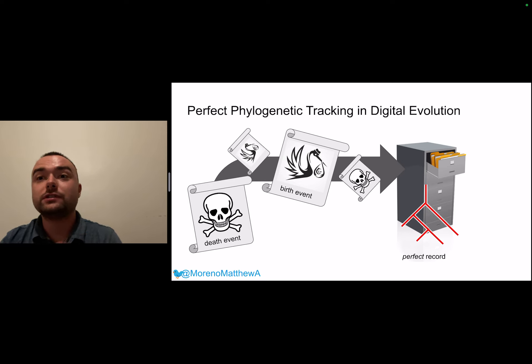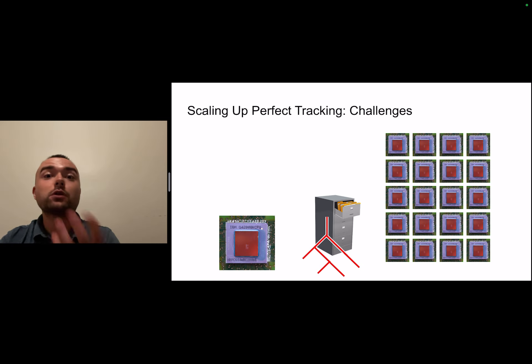Digital evolution systems traditionally use a perfect phylogenetic tracking approach to actually record phylogenetic events as they occur in order to have a perfect record of the actual underlying phylogenetic relationships between individuals within the simulation. You can imagine this kind of like one centralized filing cabinet where all of the events in the simulation are routed there and then assembled to actually construct the phylogenetic tree as it occurs. This works great for traditional single-threaded, single CPU digital evolution experiments.